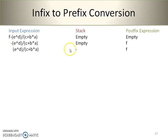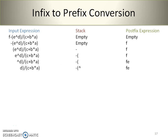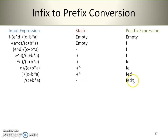Next, the minus operator is scanned — since the stack was empty, push it onto the stack. The opening bracket is pushed onto the stack. E is copied into the postfix expression. The exponent operator is pushed onto the stack. D is placed on the postfix expression. A closing bracket means we perform repeated pop operations until the opening bracket — there is only one operator in that group, so the exponent is popped and put onto the postfix expression. The next operator is division, which has higher precedence than the top of the stack, so perform a push operation.